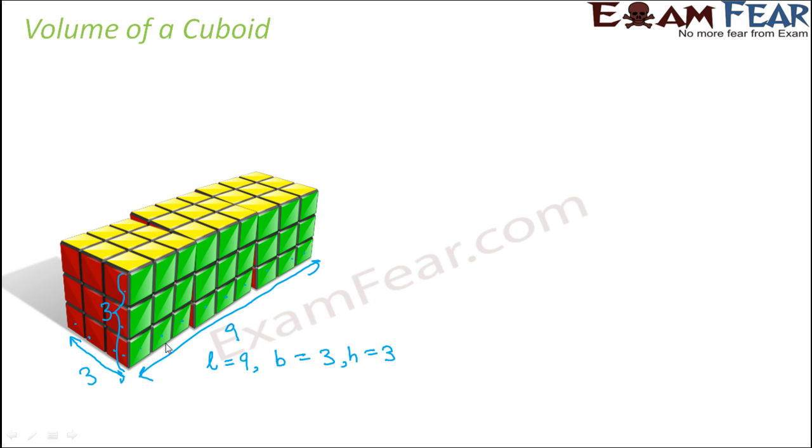So how do you find out the volume of this cuboid? If you think of the small cubes, how many cubes do you need to form the length? You need 9 cubes to form the length. But you also need 3 cubes to form the breadth. This length into breadth together will form the area. But the moment you put more cubes on top, your height is increasing. Therefore the volume is increasing.